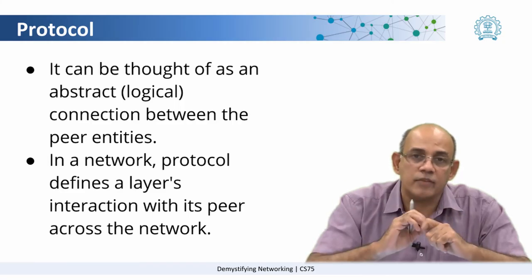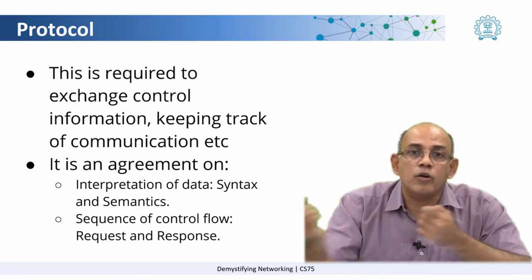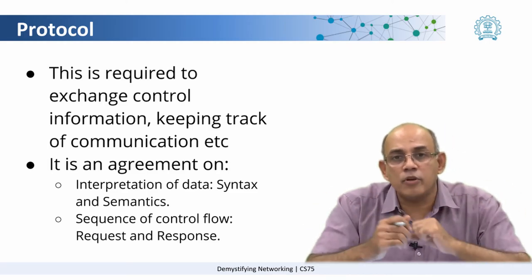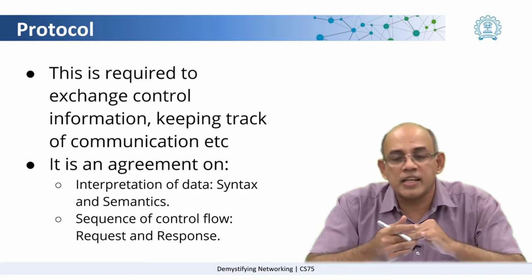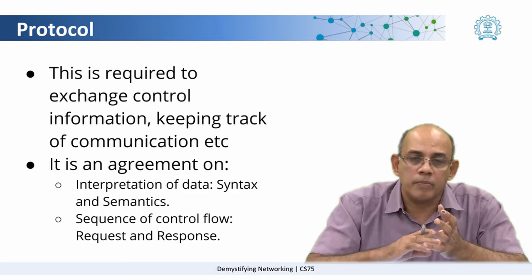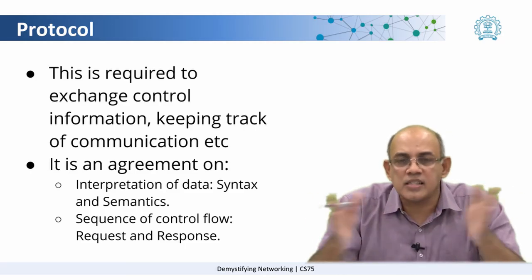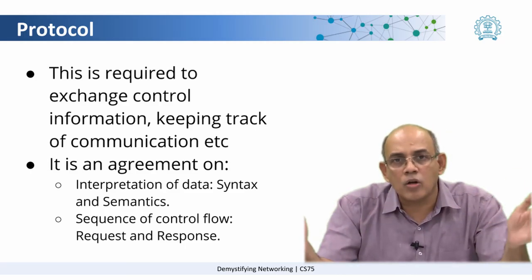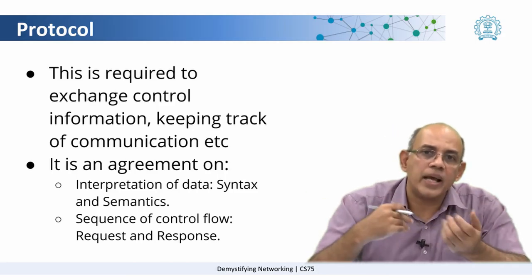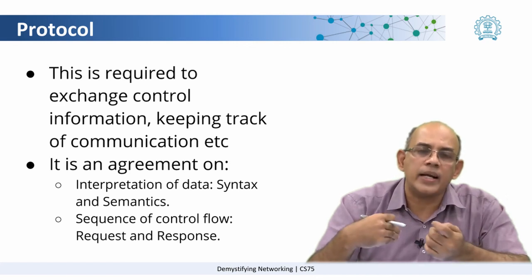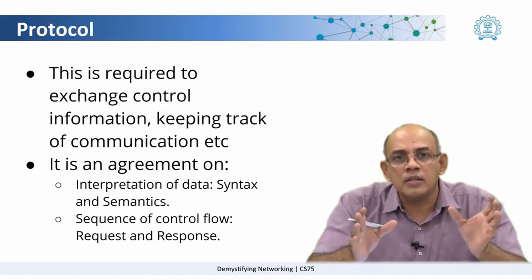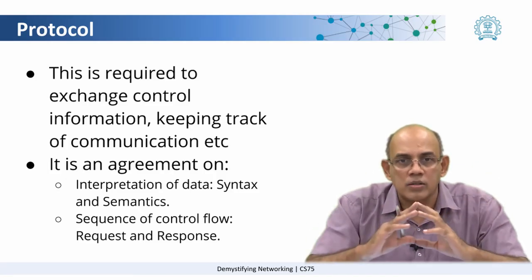They need the notion of acknowledgements, so that the layer can keep track of which packets have been received on the other side, which acknowledgements have come, which packets may have been lost, and which need to be retransmitted. In order to have this understanding between the same layer across the network, that idea is called a protocol. They have a mechanism by which certain control packets are exchanged, by which they come to know what is the current state of the data being transmitted across the network.